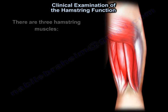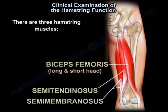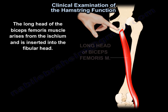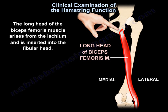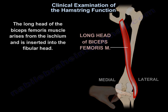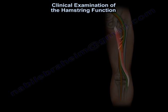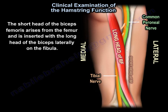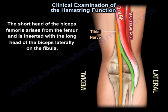There are three hamstring muscles. The biceps femoris: the long head arises from the ischium and is inserted into the fibular head. The short head of the biceps arises from the femur and is inserted with the long head of the biceps laterally on the fibula.